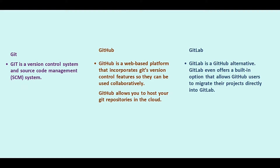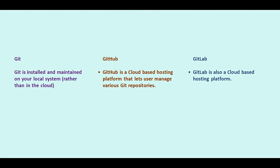On the other hand, GitLab is a GitHub alternative. GitLab even offers a built-in option that allows GitHub users to migrate their projects directly into GitLab. It is installed and maintained on your local system rather than in the cloud, whereas GitHub is a cloud-based hosting platform.